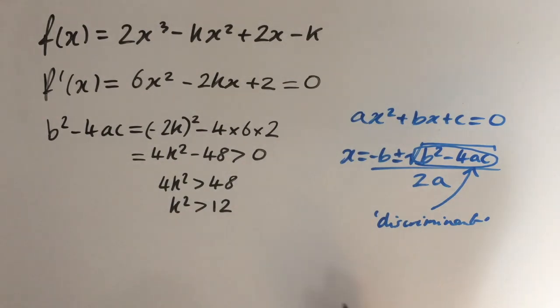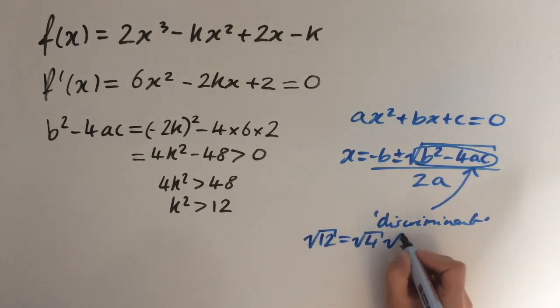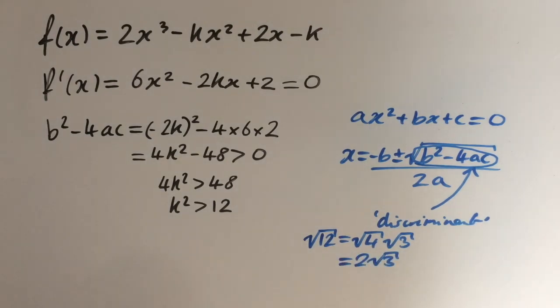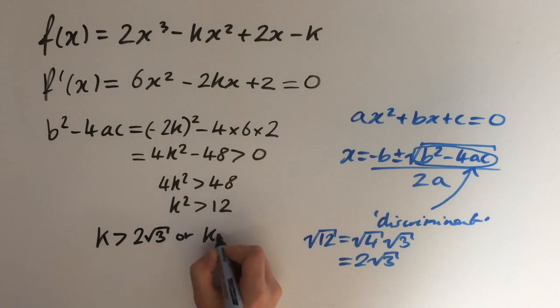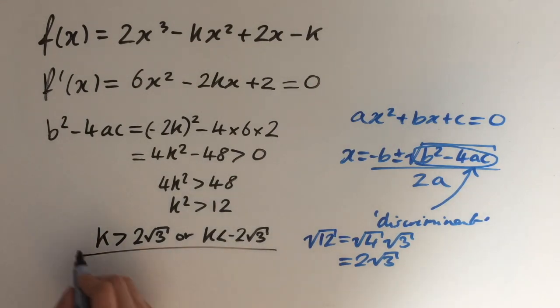And we're almost there. Firstly, note that the square root of 12 is equal to the square root of 4 times the square root of 3. And square root of 4 is just 2, so this is equal to 2√3. This means that this inequality here is equivalent to saying k > 2√3 or k < -2√3. And this is our answer.